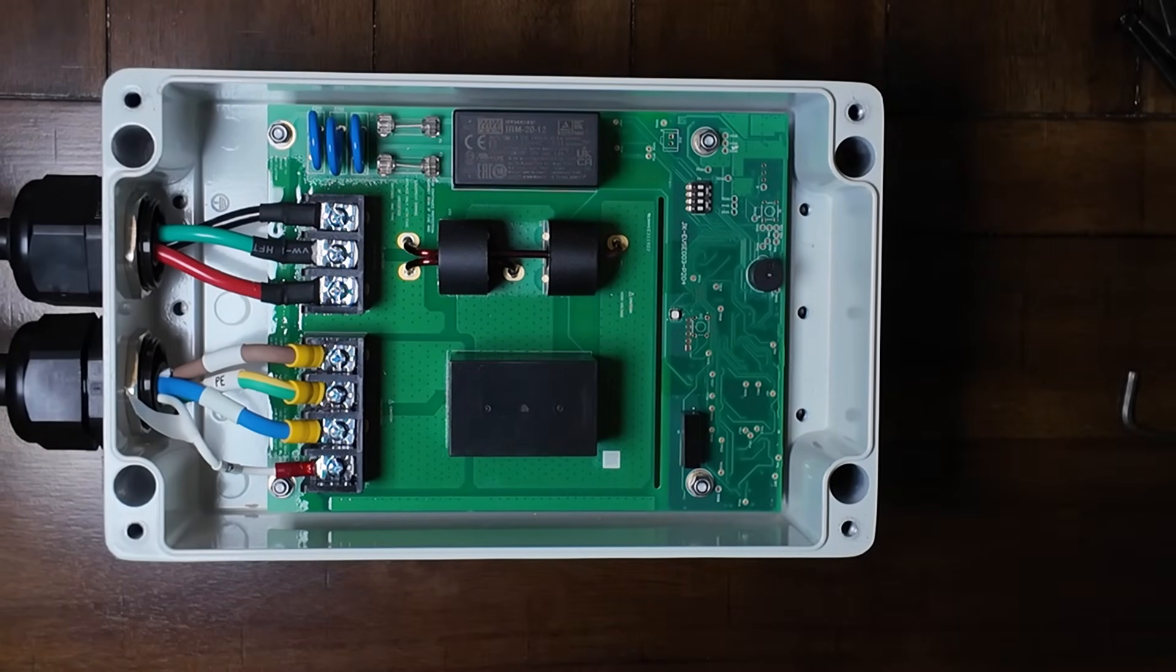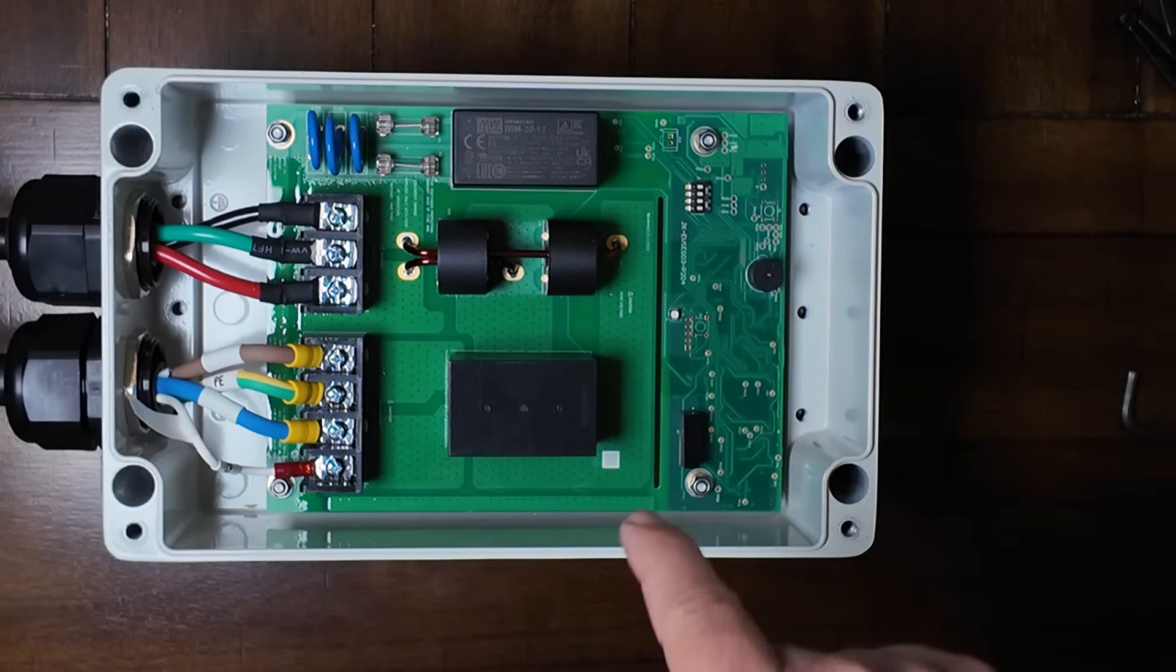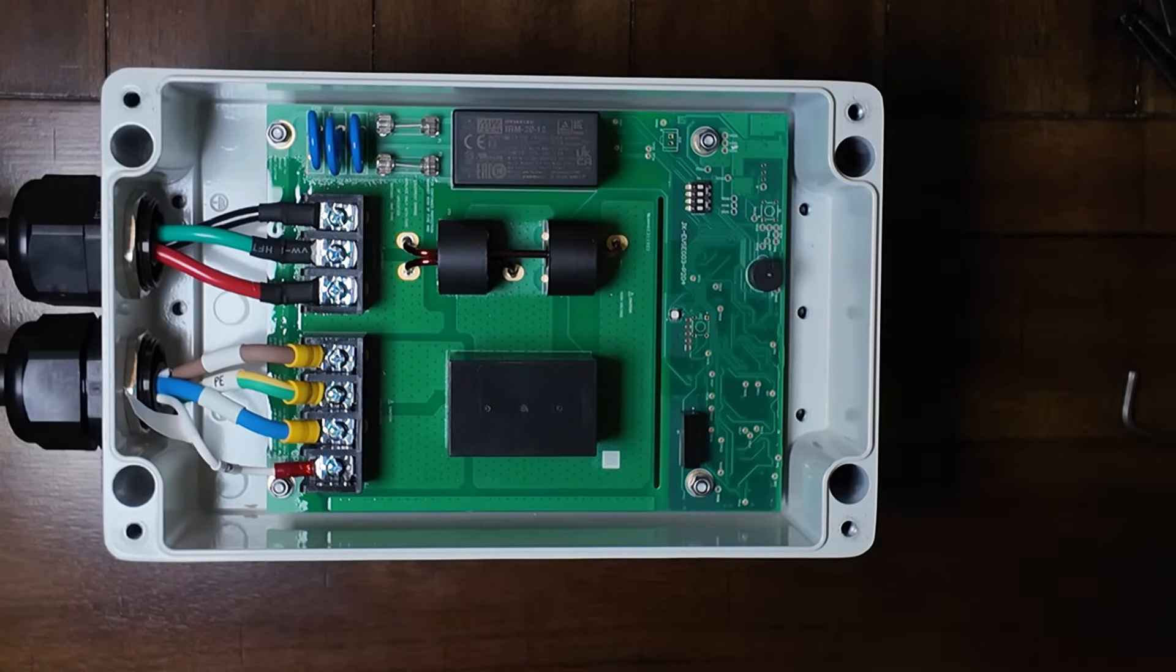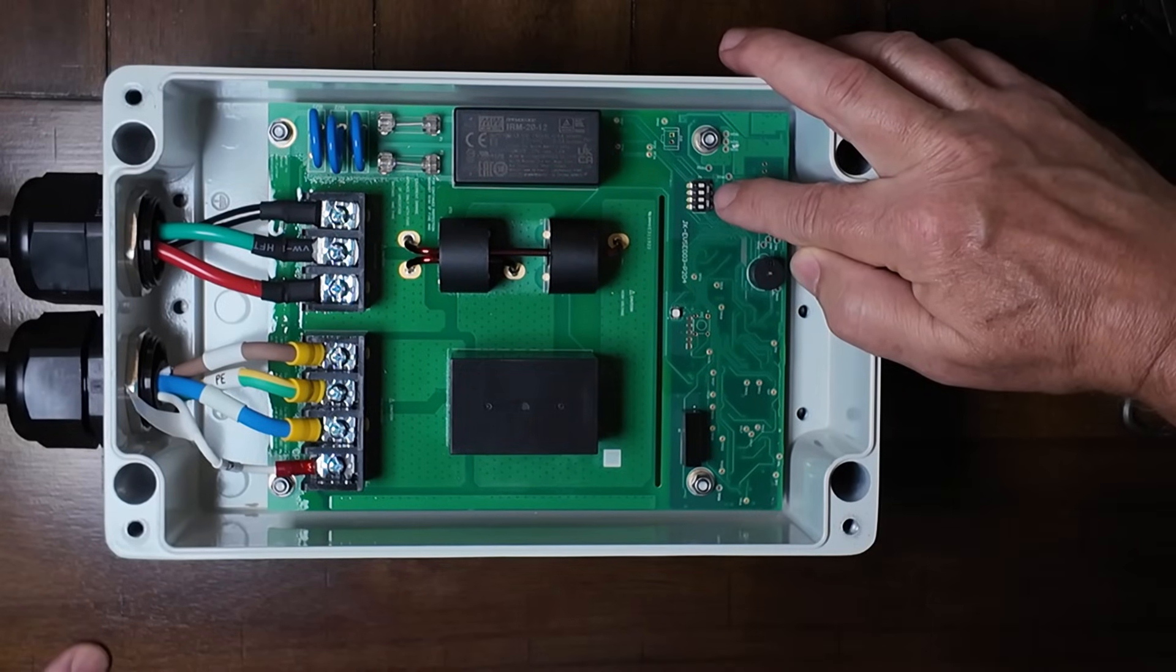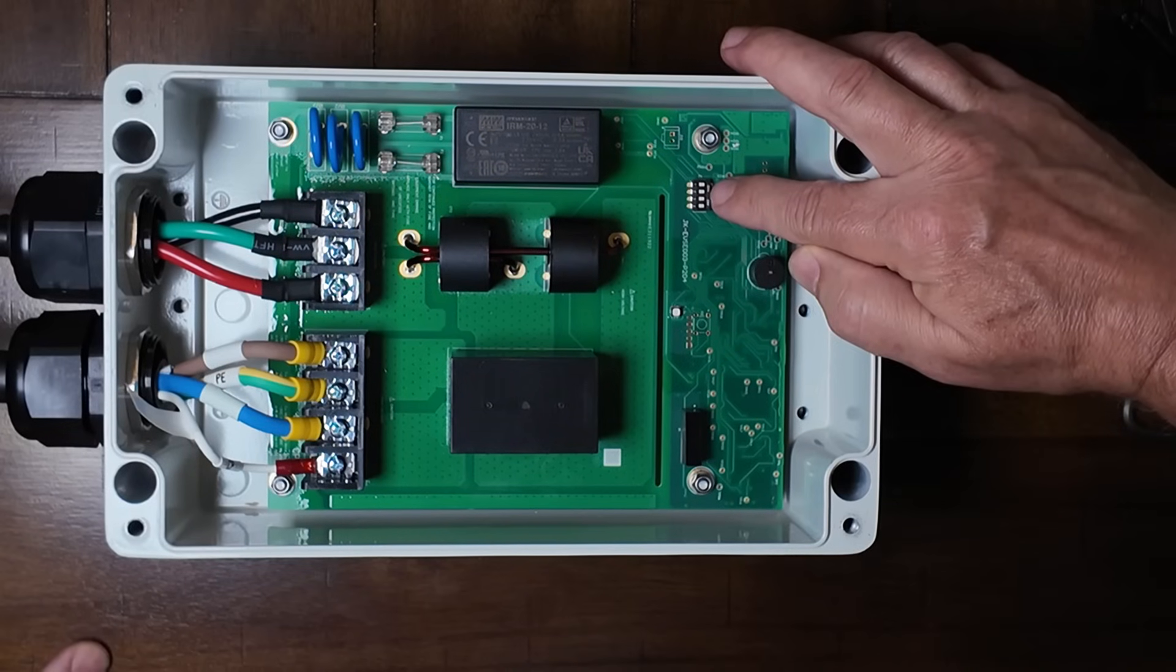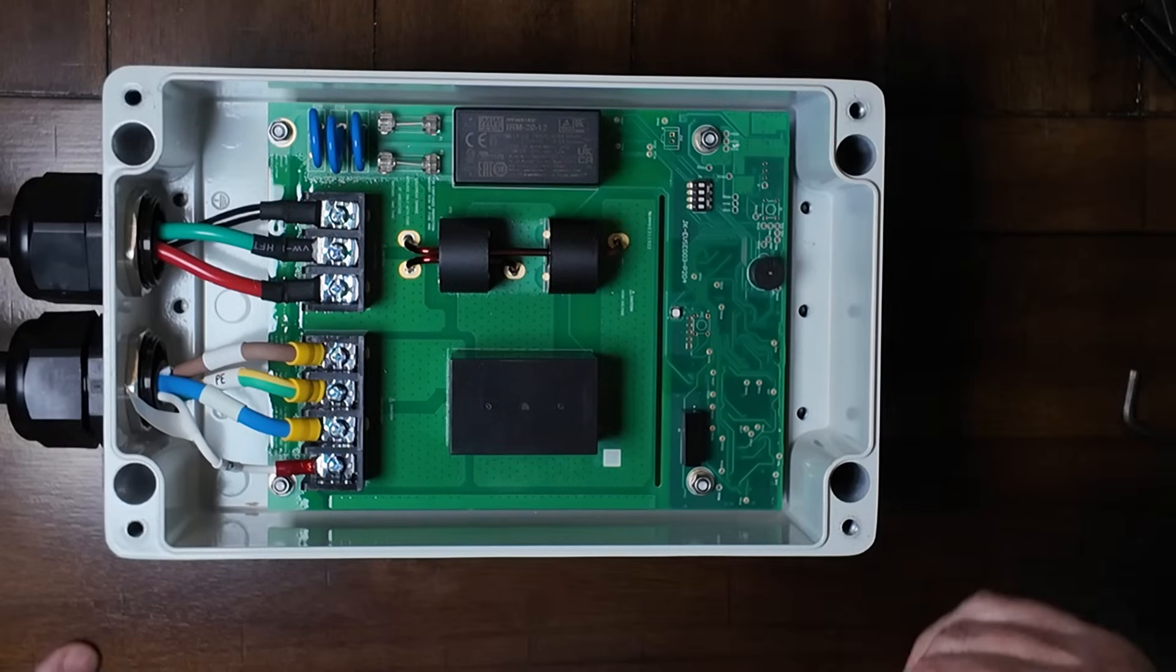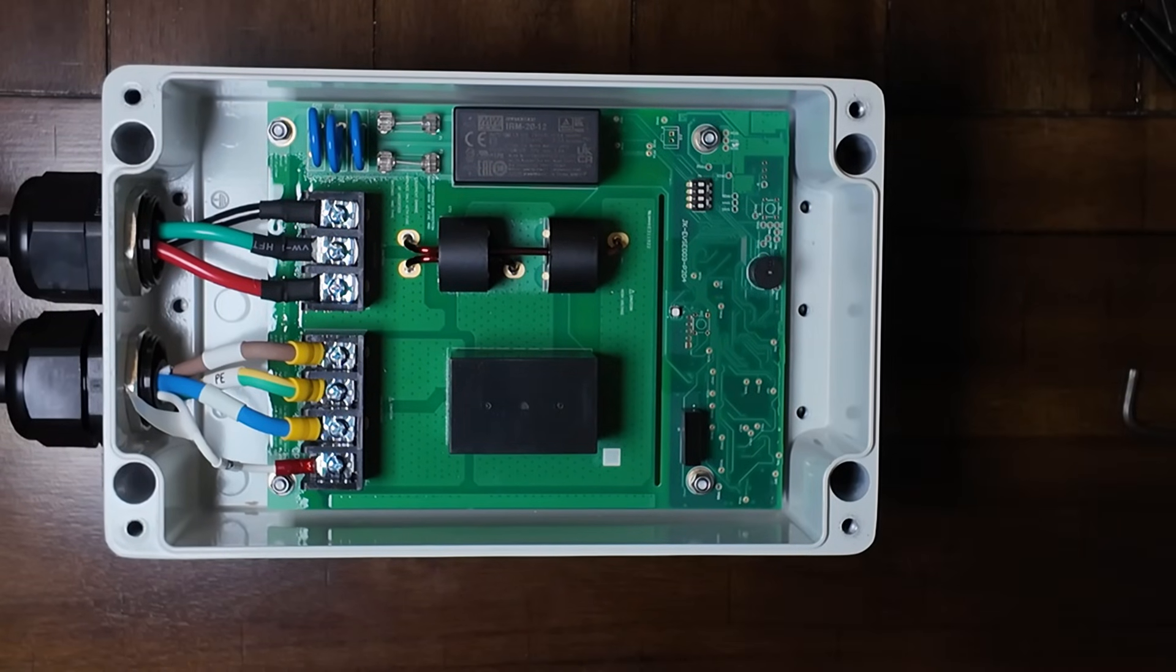We are now inside the system. Looks like it's doing pretty well after all this time. I don't see any overheating indications at all inside the system. What we're actually going to focus on today is here. These are the DIP switches which determine the amperage that's delivered to the car. I'm going to zoom in on that and make sure that we're setting it properly.